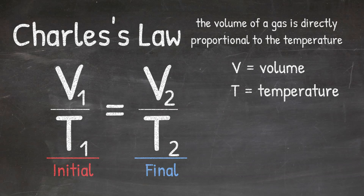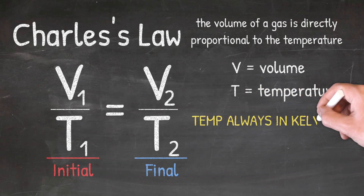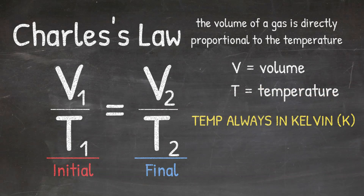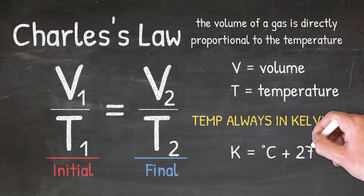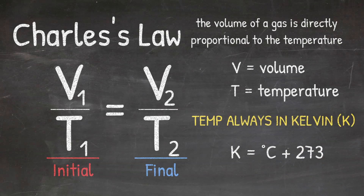It is important to note that for this formula, you need to make sure that your temperature values are always in Kelvin. If you use Celsius when solving this formula, you are going to get the wrong answer. Remember that to convert Celsius to Kelvin, you simply add 273 to the Celsius temperature.